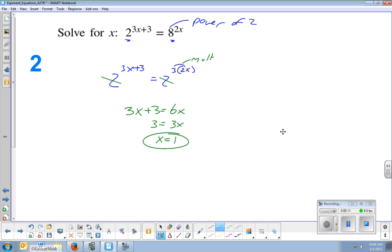Let's check it out. Make sure that's right. So this is 2 to the 3 times 1 plus 3 equals 8 to the 2 times 1. And this would simplify 3 times 1 is 3, plus 3 is 6, and that equals 8 to the 2 times 1 is 2. And at a quick glance, you might not know if this checks out or not. But again, you're going to use your calculator to do that.